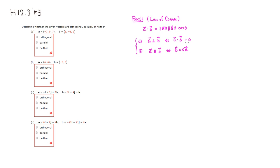Let's look at part A. It's not a constant multiple, so it's going to be either orthogonal or neither. Let's compute the dot product. A dot B: negative 7 times 6 is negative 42, plus 5 times negative 8 is negative 40, plus 7 times 3 is 21. This is a very negative number, so it's not equal to zero. Therefore it's not orthogonal, and we know it's not parallel, so it's neither.